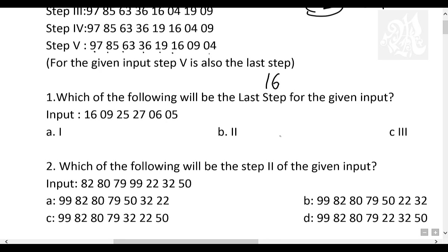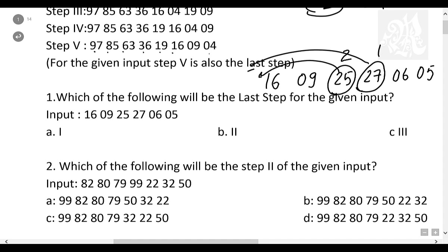Now we have to use the same rule for all the questions given below, which means shifting and descending. Let's look at this question. Now we have 16, 9, 25, 27, 06, 05. What logic? Shifting. What sort? Descending. Highest number, 27, we'll take one step. 25, we'll take the next step. And if you notice carefully, the rest all is descending. So the 27 comes here and then 25 comes here and the rest all are descending. That's the answer. Two steps to reach the output.